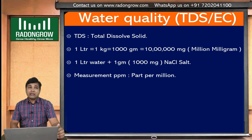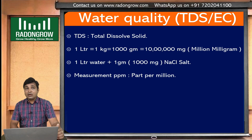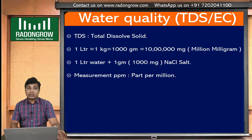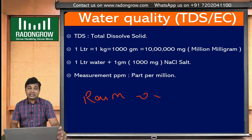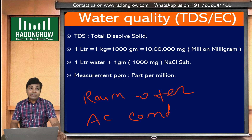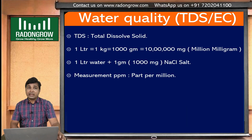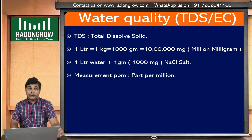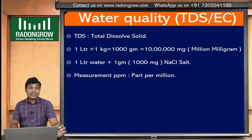Generally we use RO water, and its PPM must be less than 30, or we can say TDS must be less than 30 PPM. Even for hobby purposes, we can use rainwater — rainwater TDS is typically 20 to 30 PPM. We can also use AC condensate for hobby purposes. Any water having TDS less than 30 PPM is good for hydroponics. For commercial purposes, always use less than 30 PPM RO water or pure water.